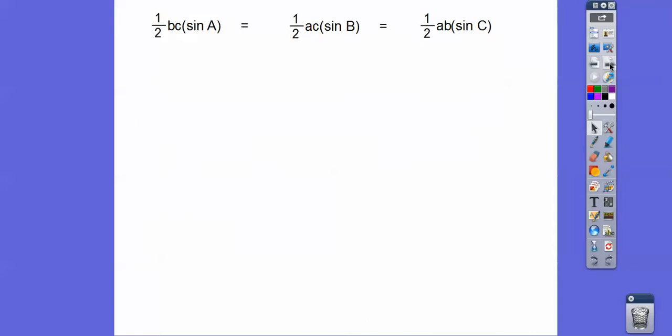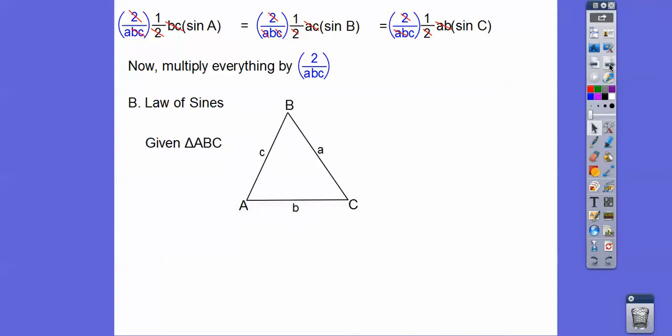So let's multiply everything by 2 over ABC. And what happens is, things cancel out. Here the BCs cancel, the 2s cancel out in all of them. Here the ACs cancel, here the ABs cancel. And so what that does is lead us into what's called the law of sines.